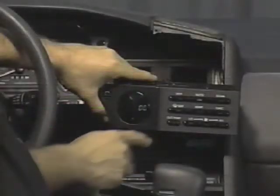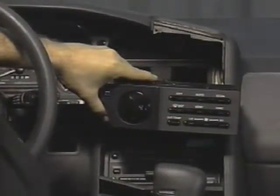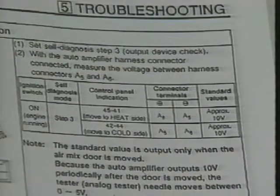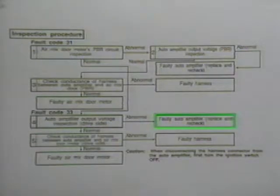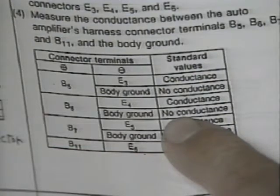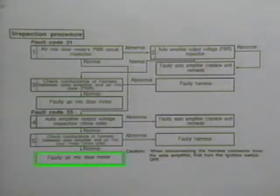The motor drive circuit check should be used if the results of the PBR check were correct or if the fault code leads to this area. Use the output signal recognition mode to provide a motor output signal. Measure the voltage output of the ACU as indicated in the service manual. Reverse the direction of the motor by selecting the appropriate output signal and verify reversed output voltage. Incorrect readings indicate the ACU is at fault. If the readings are correct, proceed to the motor harness check. Check for continuity between the actuator connector and the ACU connector terminals as indicated in the service manual. If the readings are not correct, the harness is at fault. If the readings are correct, the actuator is at fault.